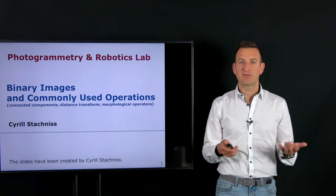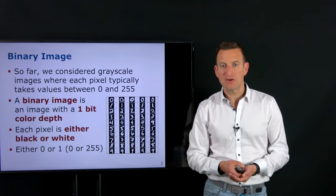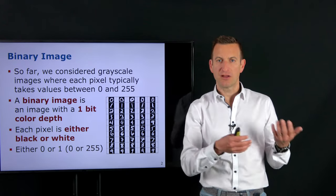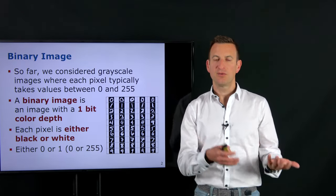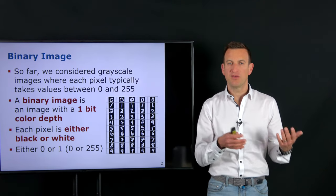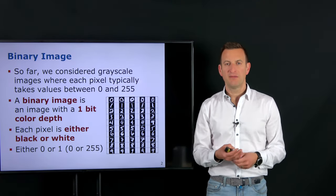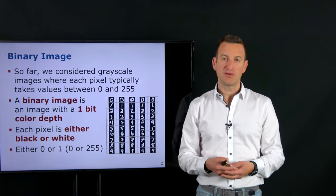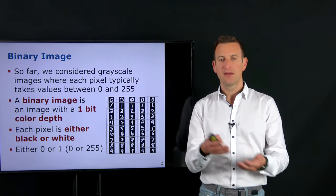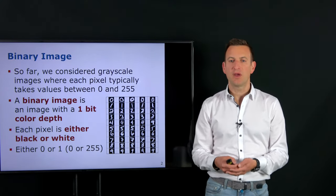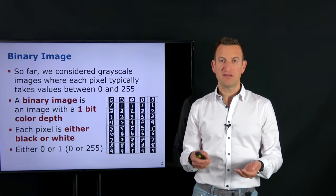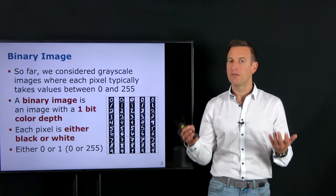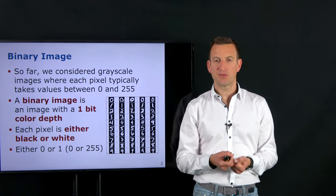Let us start by explaining what a binary image is. A binary image is actually something very simple — it's basically an image which only consists of two colors: pure white and pitch black. So we just have two possible intensity values, 0 and 1, or in terms of regular images, the intensity value 0 and the intensity value 255. One for black and the other for white.